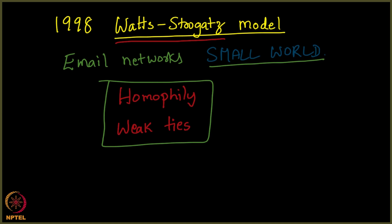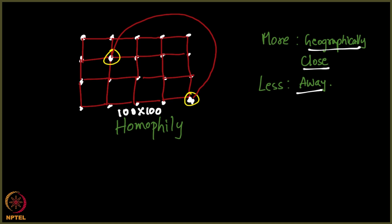Watts and Strogatz proposed that it is because of the homophily and weak ties that in a grid like this, while most of your friends are your neighbours on the grid, some of us tend to make friends with far away people as well, and this is what is leading to the small world phenomena. Let me explain.